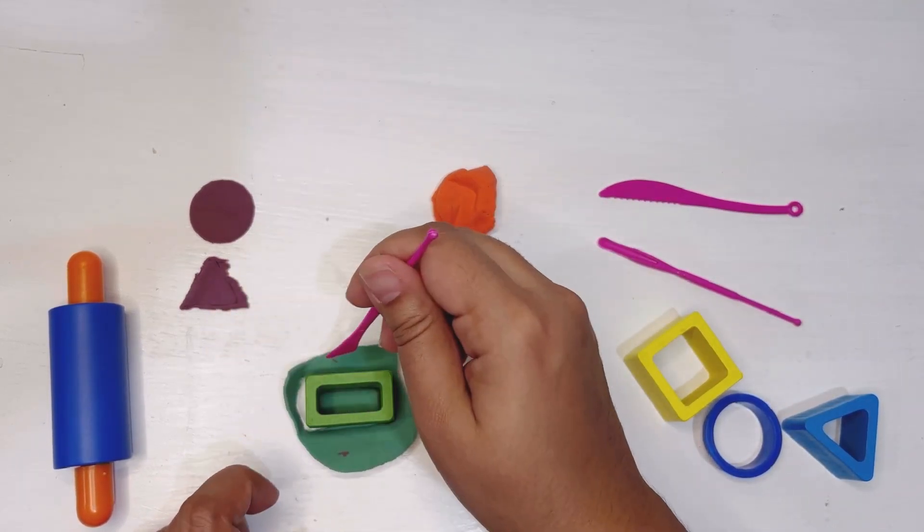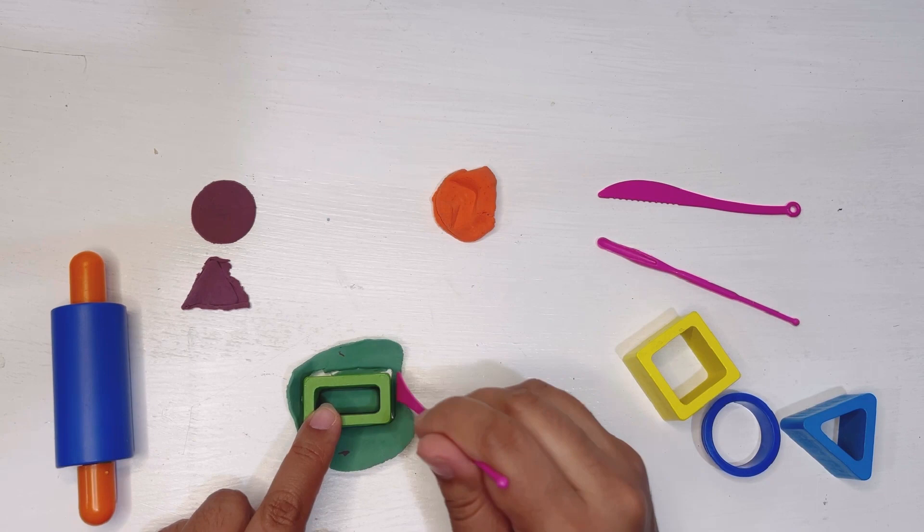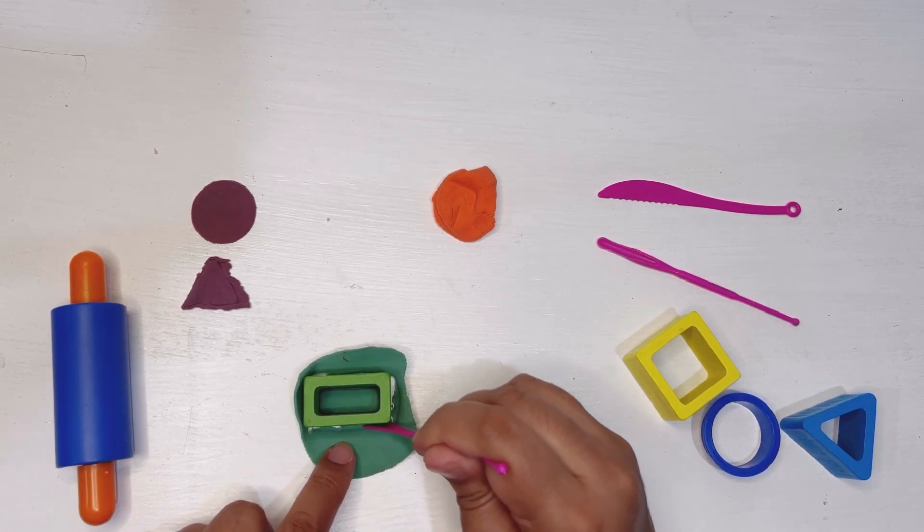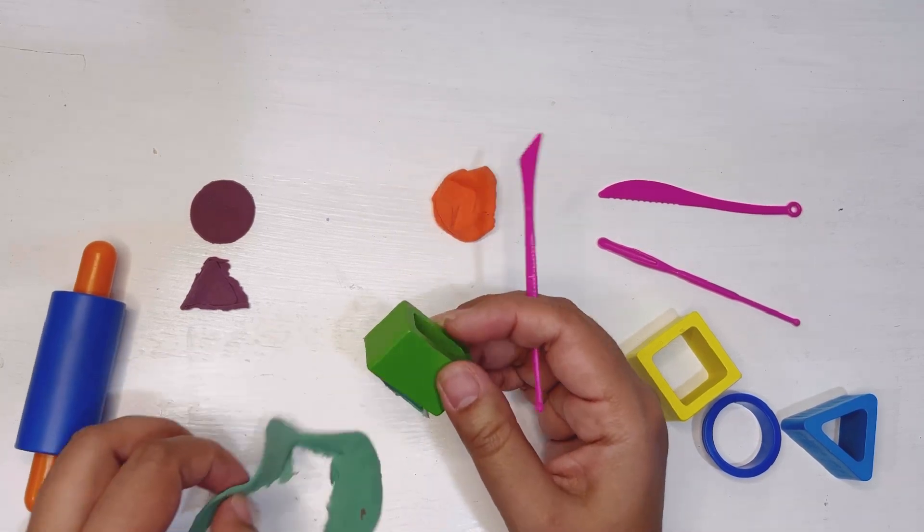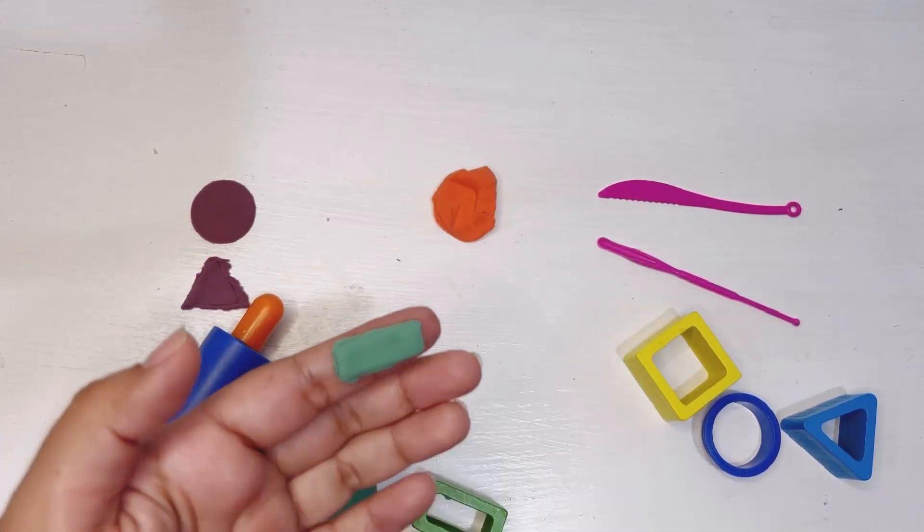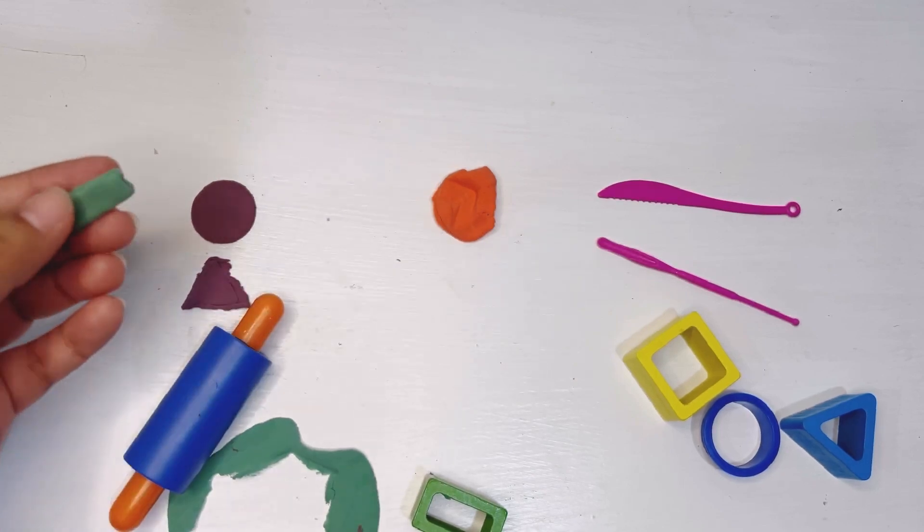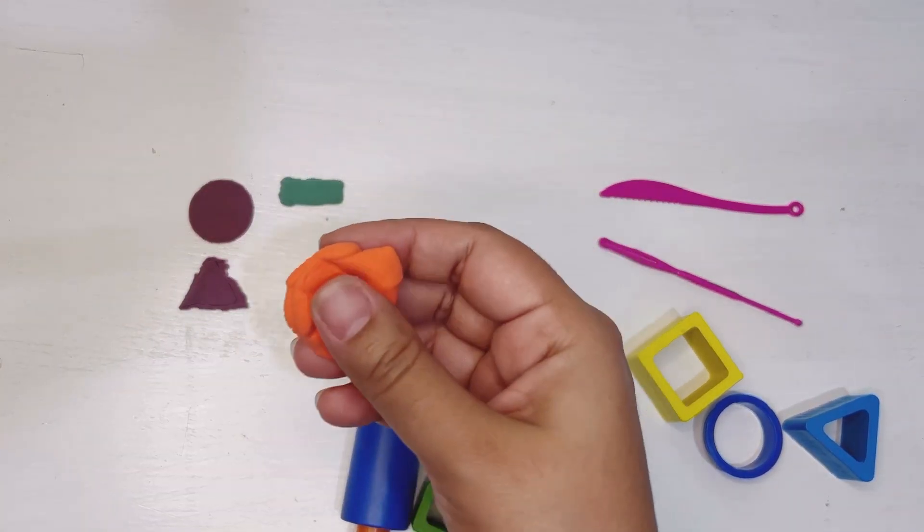Let's put the extra play-doh on the side and make a perfect rectangle. Here you go, this is the final look of green rectangle, just put on the side.